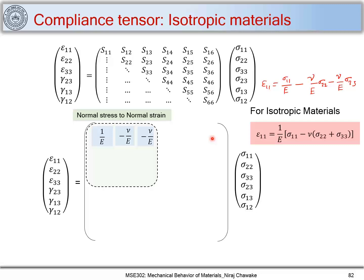The last three components in that row are 0, 0, 0. Similarly, for ε₂₂ the components are −μ/E, 1/E, −μ/E, and for ε₃₃ they are −μ/E, −μ/E, 1/E. We can get all nine normal-to-normal components using this relation, and the remaining three terms in each row are zero.